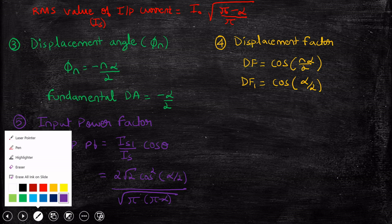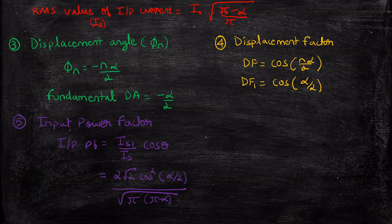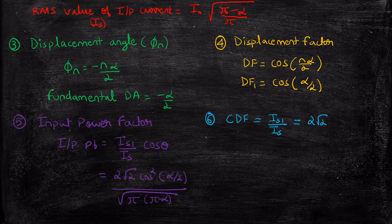Next is the current distortion factor, CDF, given by I_s1 / I_s. Substituting the known expressions for I_s1 and I_s, you get: CDF = (2√2 · cos(α/2)) / √(π · (π − α)).